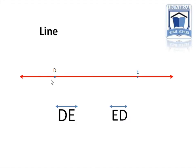So don't forget a line is a series of points that extend two opposite directions without an end. It's represented by these arrows. It has no thickness.